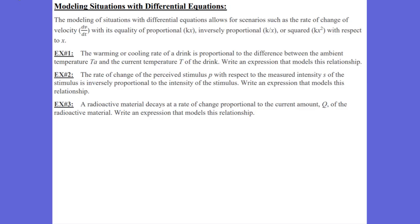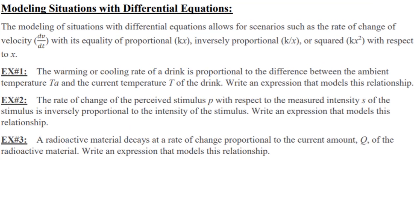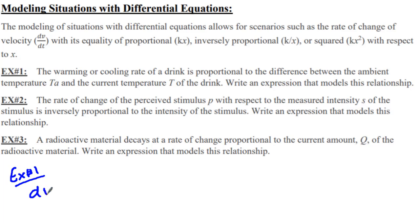It's not really that big. We want to take a look at how we model different situations with different equations. Example 1 says the warming or cooling rate of a drink is proportional to the difference between the ambient temperature T_A and the current temperature T. For example 1, the change of temperature over the change in time is proportional, so we have a constant K times the difference between T and T_A.